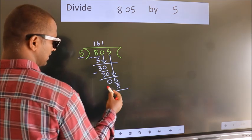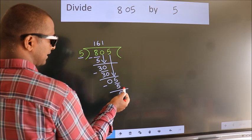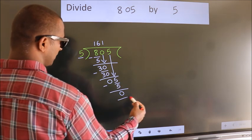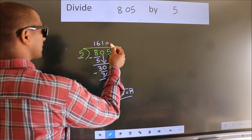Now, we subtract. We get 0. No more numbers to bring it down. So, we stop here. This is our remainder. This is our quotient.